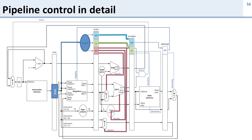In the memory stage we're going to use those control bits — some of them to control whether we read from the memory or whether we write to the memory, and others to control whether we take the branch that we computed in the previous stage. The writeback bits are moved on to the next pipeline register so they can be used in the writeback stage, where we use them to determine if we write back to the register file and what we should write back — do we write back the data from the memory or from the ALU?